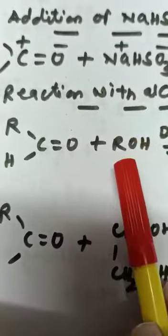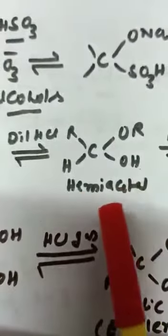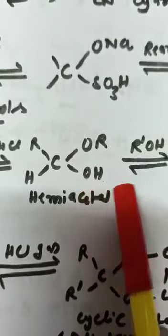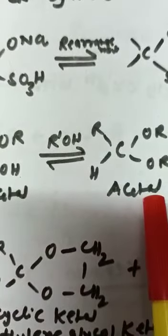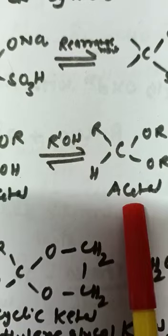Third reaction is alcohol. The alcohol reacts with aldehyde or ketone and gives first hemiacetal, and in the second step, by elimination of water, it gives acetal. In case of ketone, it gives ketal compound finally.